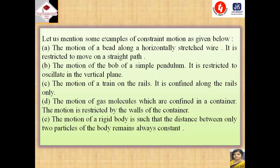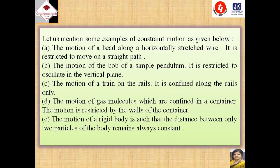Now let us mention some examples of constraint motion. The motion of a bead along a horizontally stretched wire — it is restricted to move on a straight path. The motion of the bob of a simple pendulum — it is restricted to oscillate in the vertical plane. The motion of a train on the rails — it is confined along the rails only. The motion of gas molecules confined in a container — the motion is restricted by the walls of the container. For a rigid body, the distance between any two particles always remains constant.